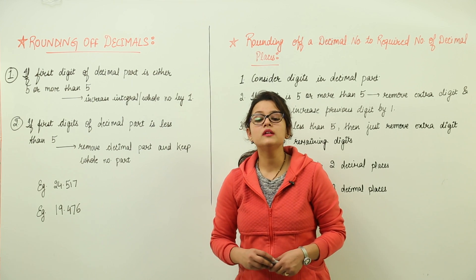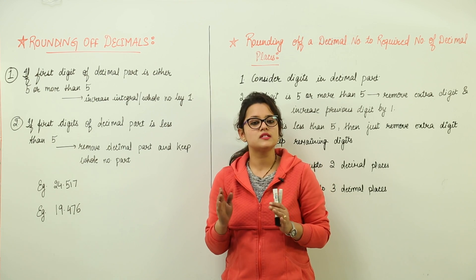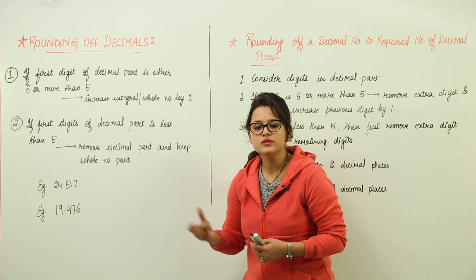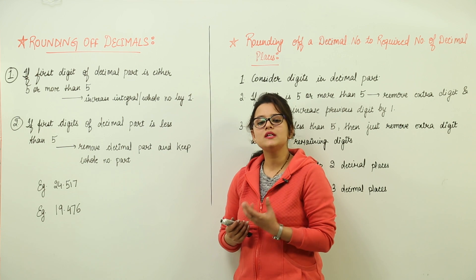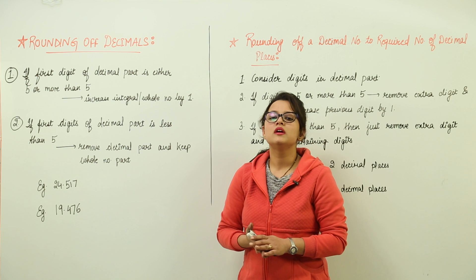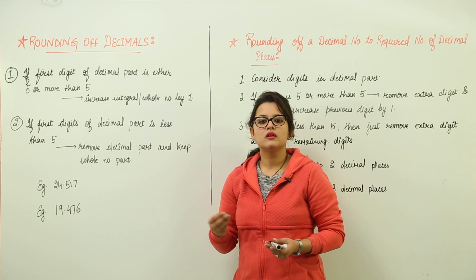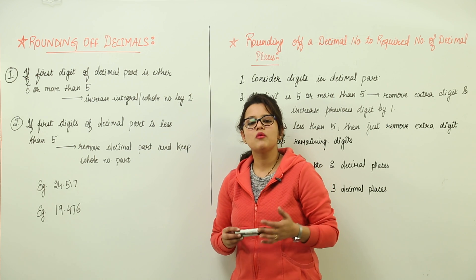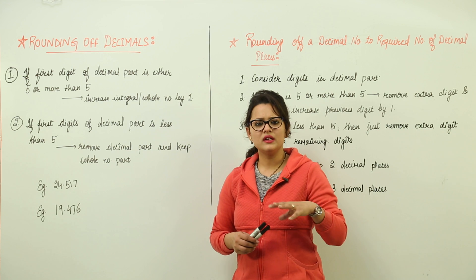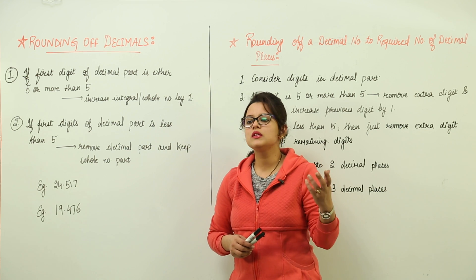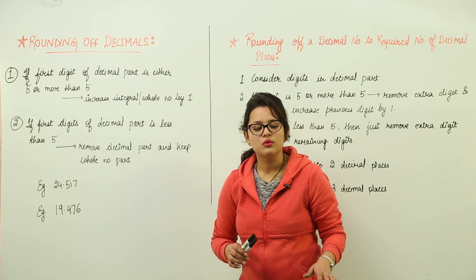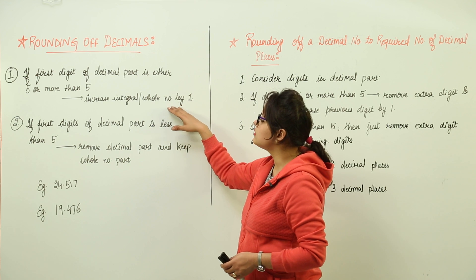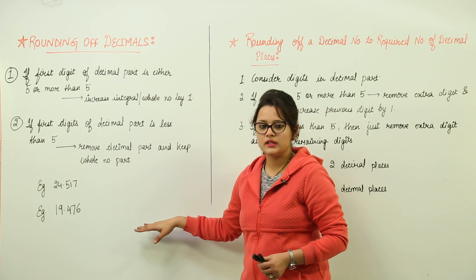Rounding off decimals. When are we supposed to round off decimals? Sometimes when you are dividing or simplifying values, you get your answer in decimal form — that is when you can round it off. For example, if you have 98 rupees in your pocket and someone asks how much money you have, you say approximately 100 rupees. So you are rounding off the values, and that is how we are going to learn rounding off of decimals.